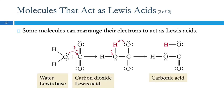Here's an example of molecules that can rearrange to form empty orbitals. So here we've got water acting as a Lewis base, so it can donate the electrons. And here we have carbon dioxide. So carbon dioxide can act as a Lewis acid. How does that work?